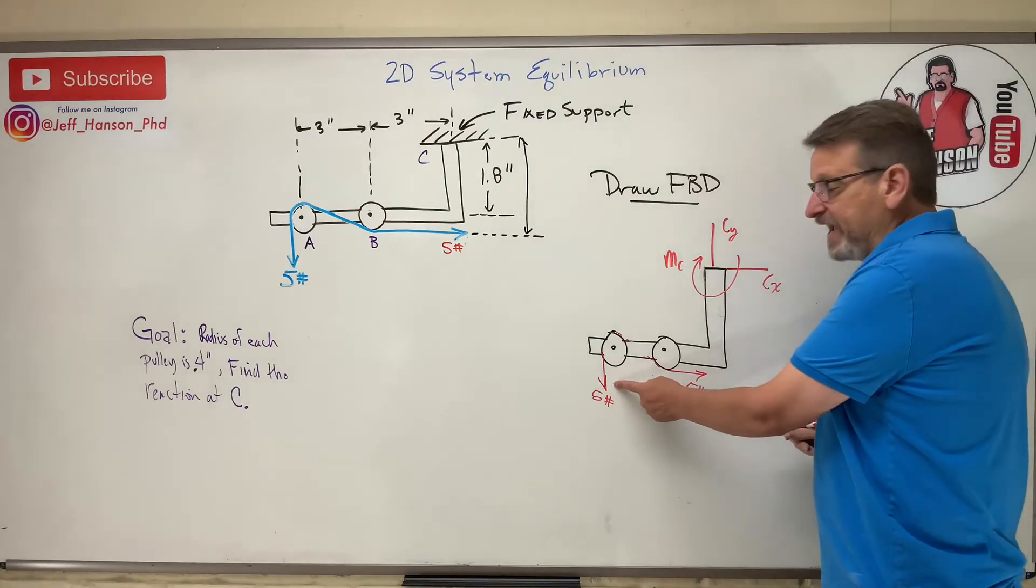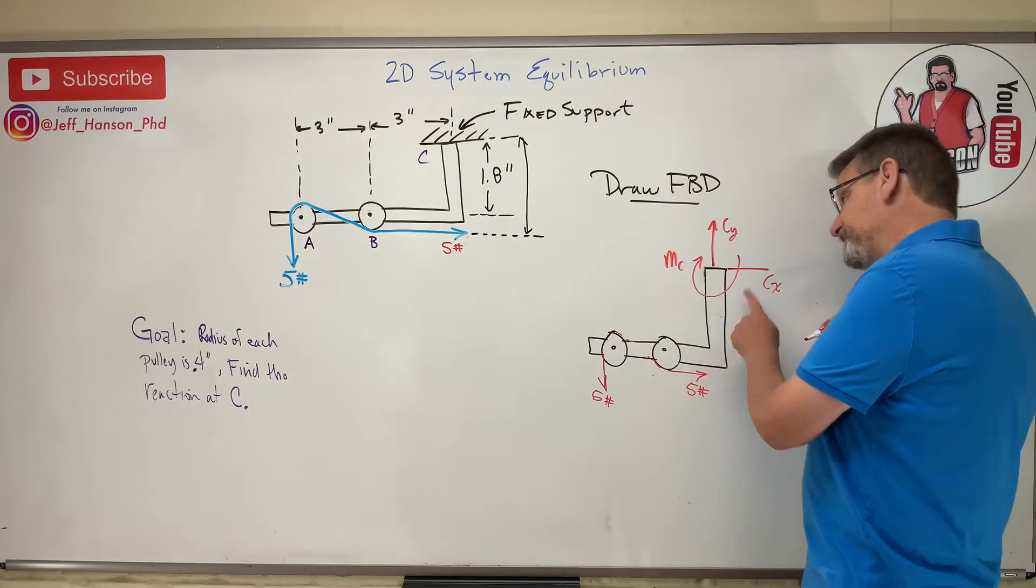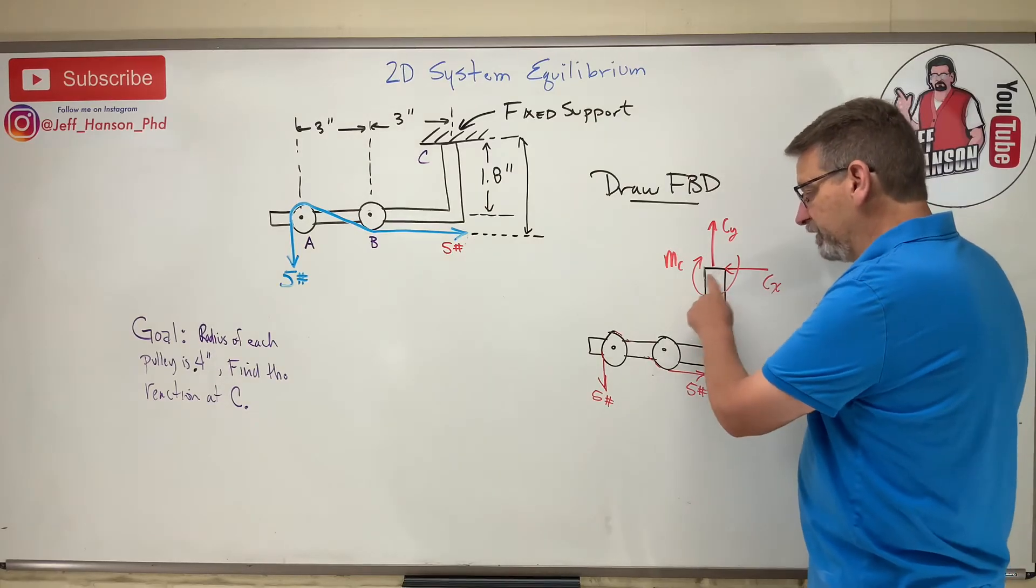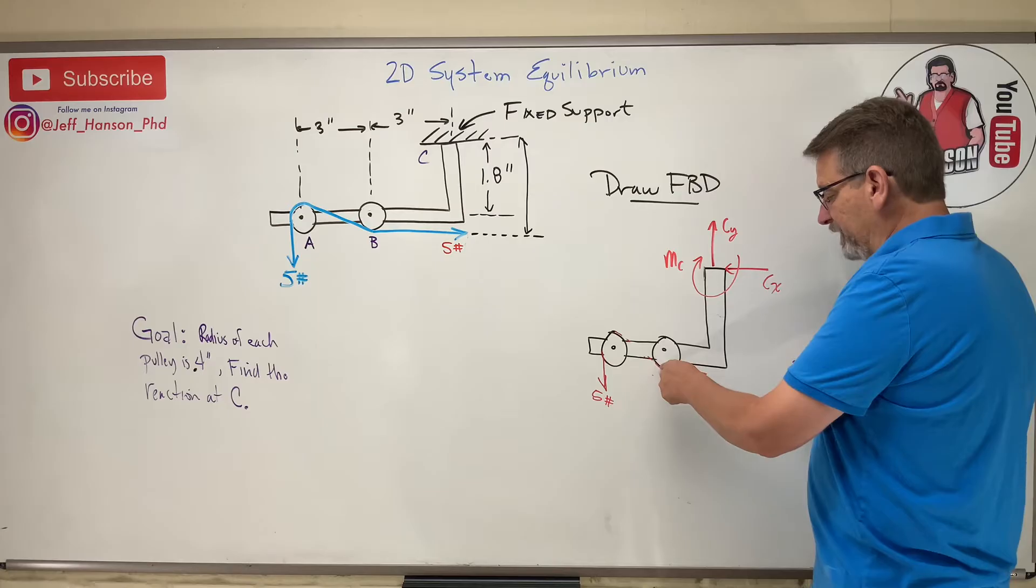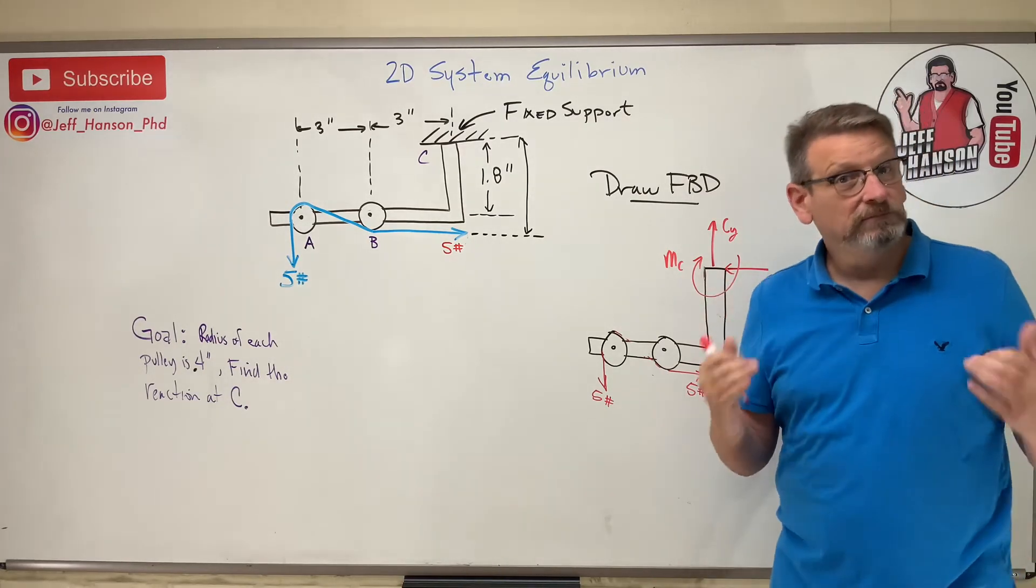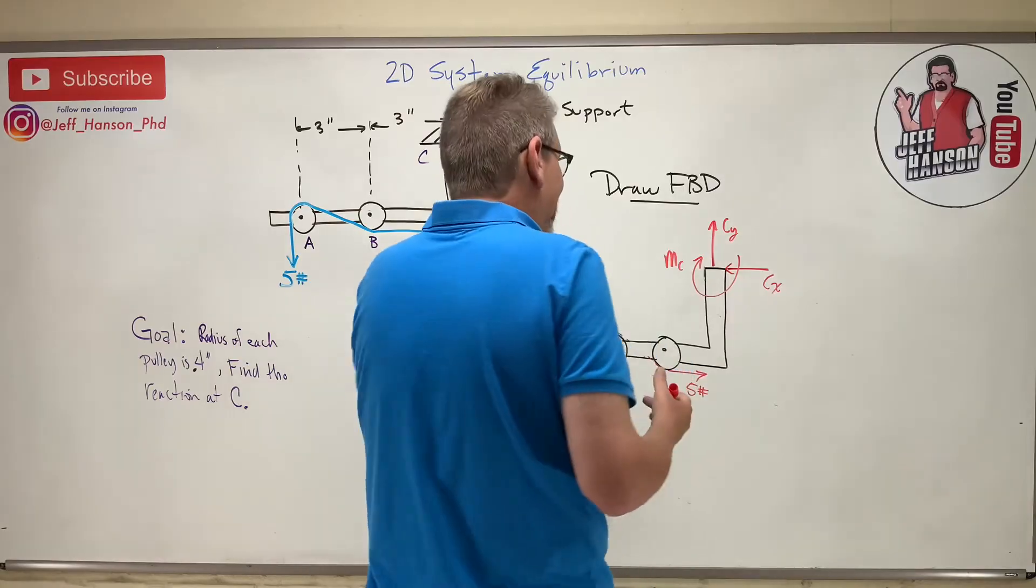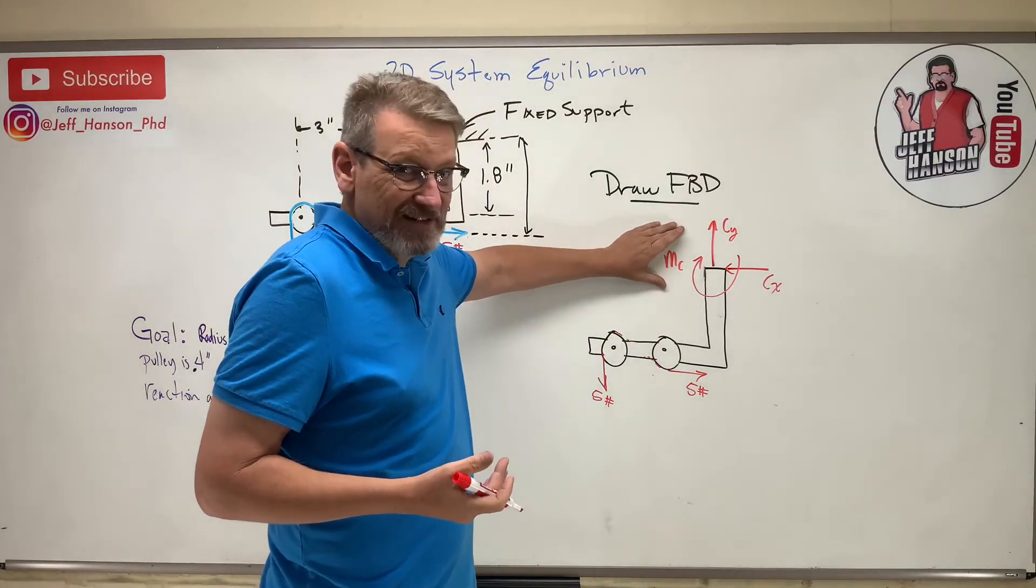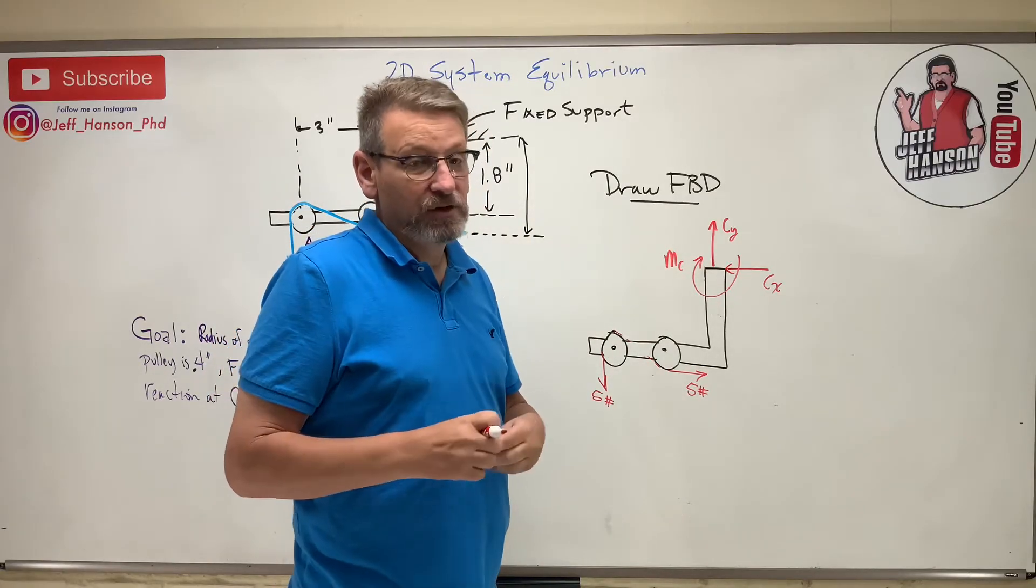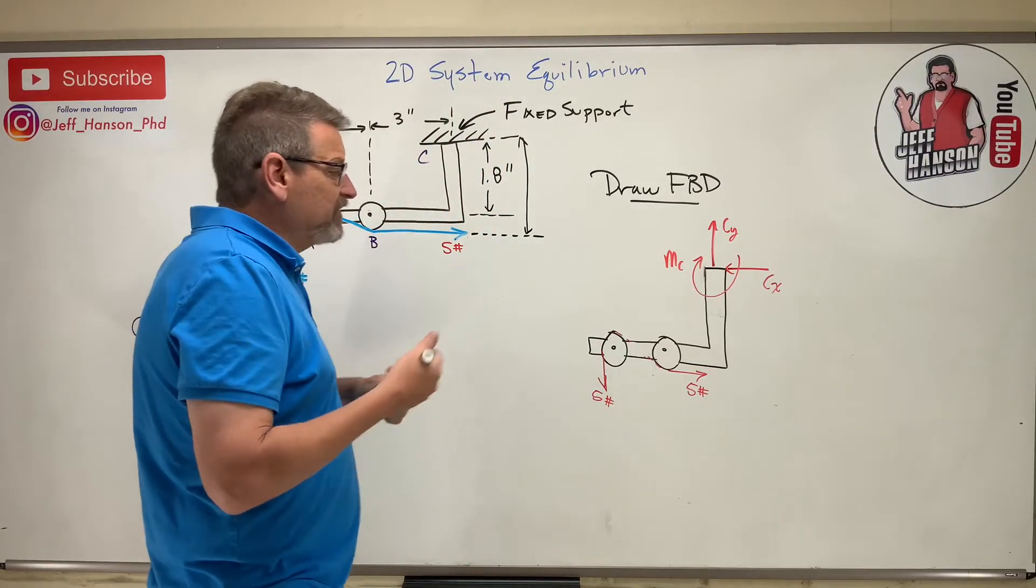Now I look at this - this 5 goes down so Cy needs to go up. This one goes to the right so Cx needs to go to the left. Then I look at these guys: put my finger here, this one makes me rotate counterclockwise, this one makes me rotate counterclockwise, so my reaction moment needs to rotate me clockwise. That way I know that I'm going to get positives. If you don't understand that and you just guessed these, that's okay, because when you solve these you're just going to get a negative and that tells you you assumed the wrong direction, but that's okay.